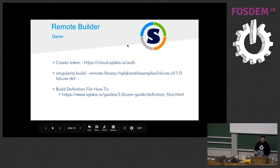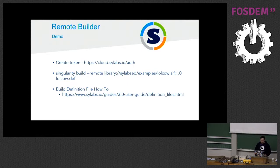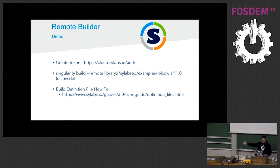This is how users can interact with the remote builder from the CLI. Rather than changing all the CLI, we just added a small flag: --remote. So if you know you don't have sudo privileges on your host, you just run singularity build --remote and the rest is the same — just point to your definition file and we will build it for you in the cloud from the CLI. There's no need to go to the web page to use the remote builder.